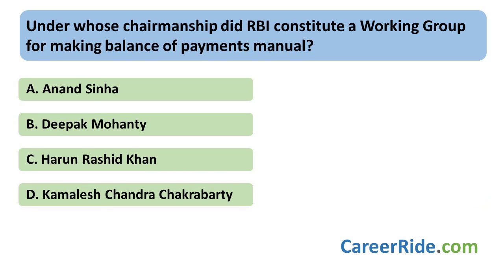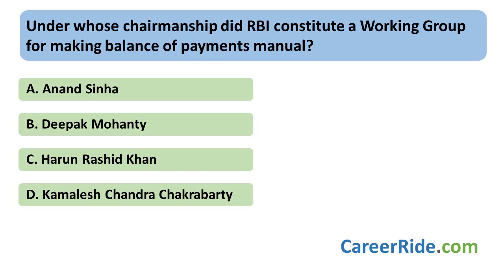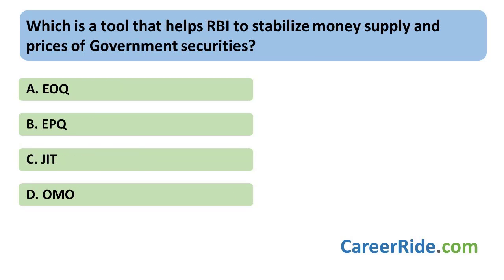Under whose chairmanship did the RBI constitute a working group for making the Balance of Payments manual? This committee was formed under Deepak Mohanti, an Indian economist working at the Reserve Bank of India who holds the post of Executive Director at the head office of RBI in Mumbai. Apart from this, a few other working committees are: the Working Group on Import Data Processing and Monitoring System, headed by AK Pande, and the Working Group on Interest Rate Options, headed by P.G. Apte from RBI.